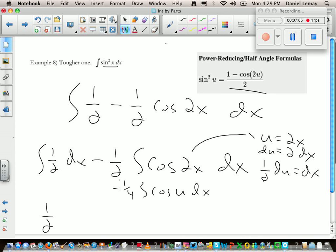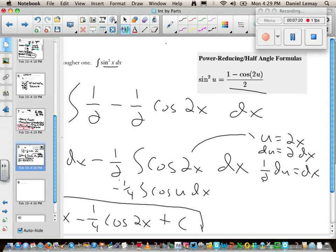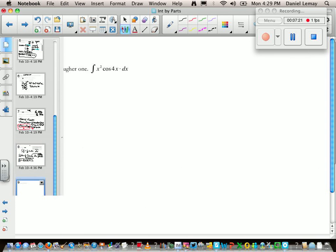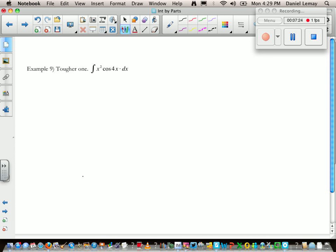Right, so if we anti-differentiate that we're going to get negative one fourth. So one half x minus one fourth cosine, and u is 2x, plus c. That is a miserable one.